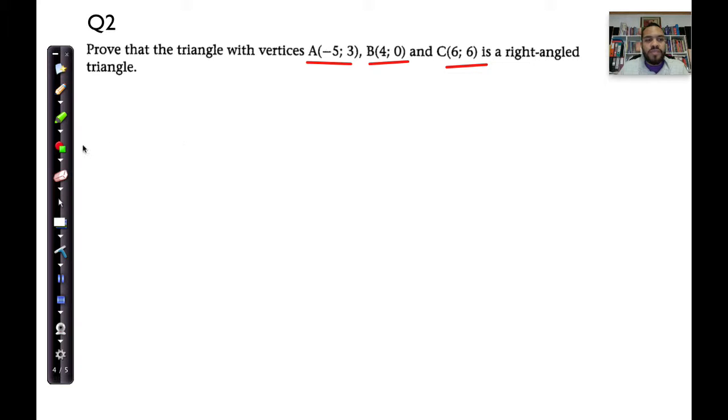So those are the three vertices of the triangle. And if we are to draw it, we can see that the triangle, a right triangle, looks something like this. Let me just bring up a shape there. And it meets at a right triangle.